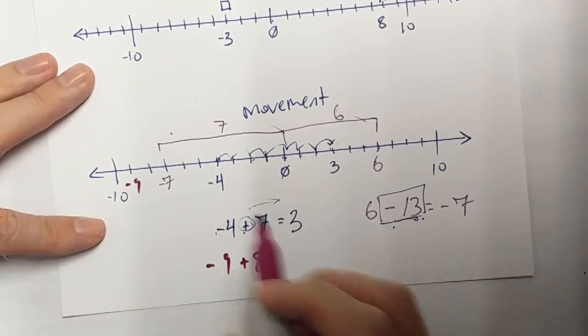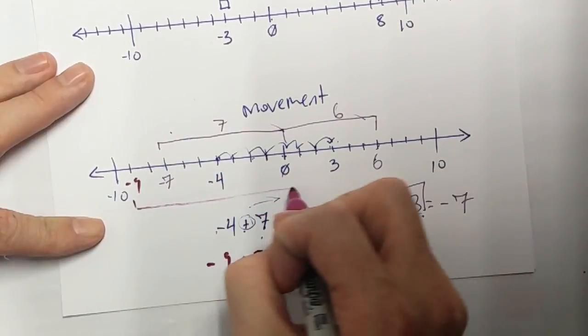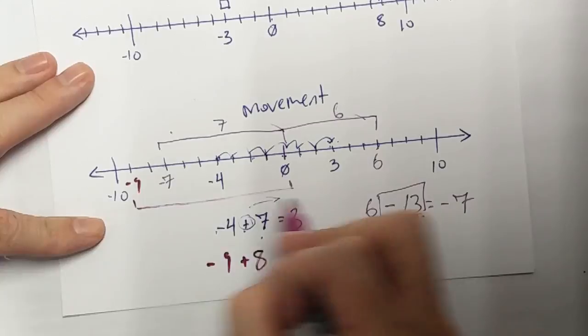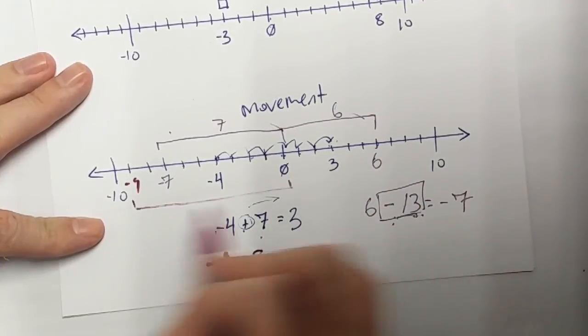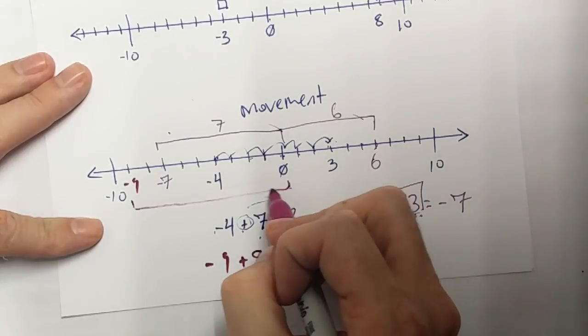Well, I know that from here all the way to 0, that's a change of 9. Well, do I want a whole change of 9? Nope. I only want to move 8, which is 1 less.